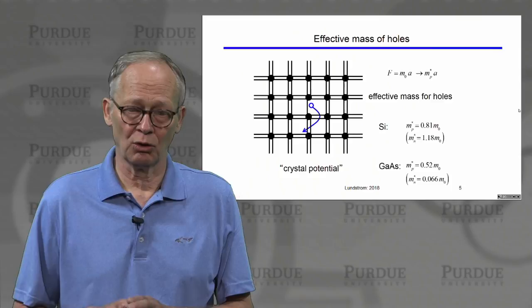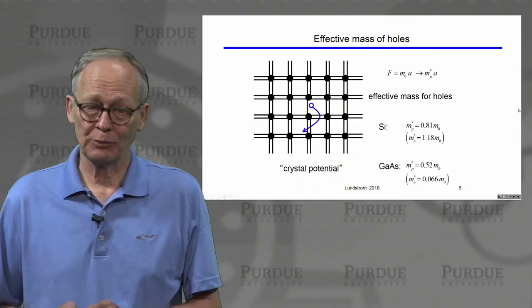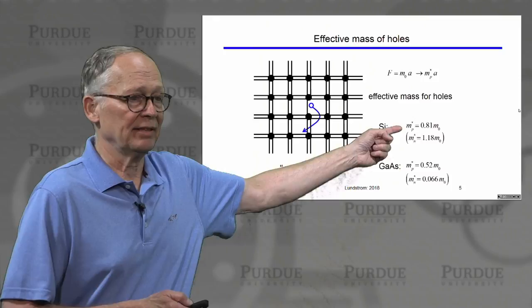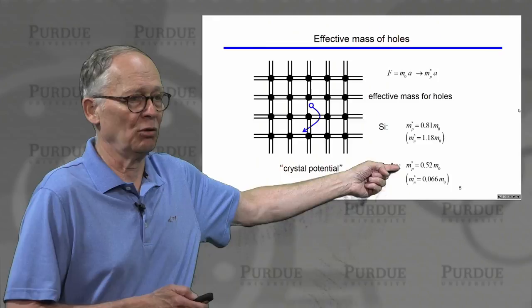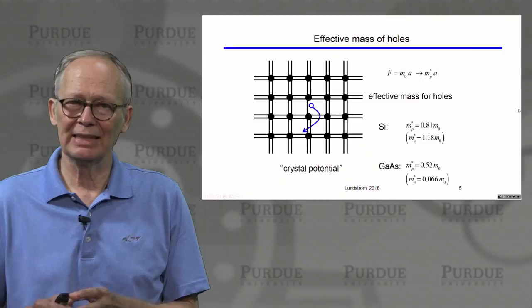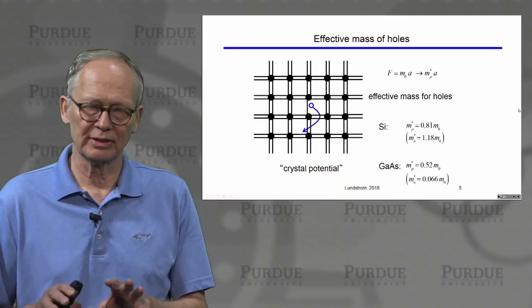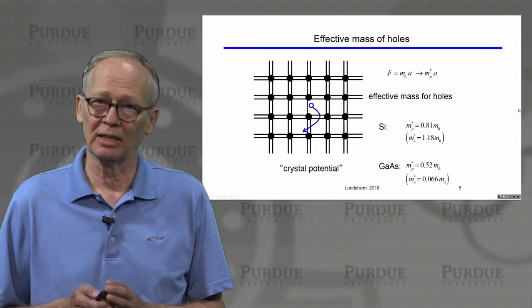The same applies to holes. Holes can be thought of as positively charged particles that move around with some effective mass. The hole effective mass is in general different from the electron effective mass — it may be larger or smaller depending on the particular semiconductor. We will consider these effective masses to be known, looked up from measurements or calculations.